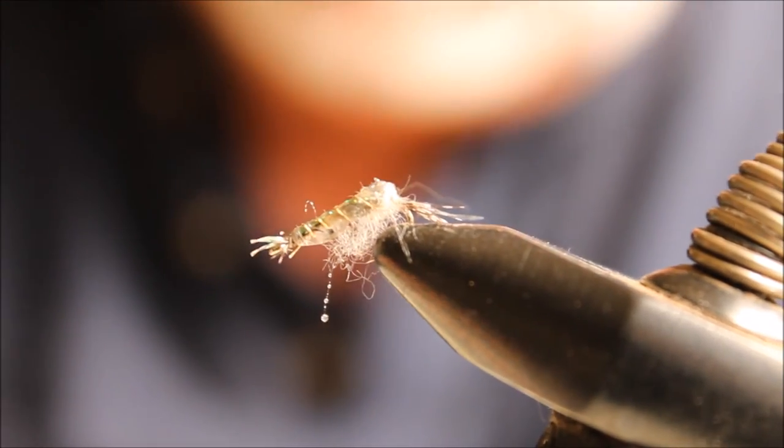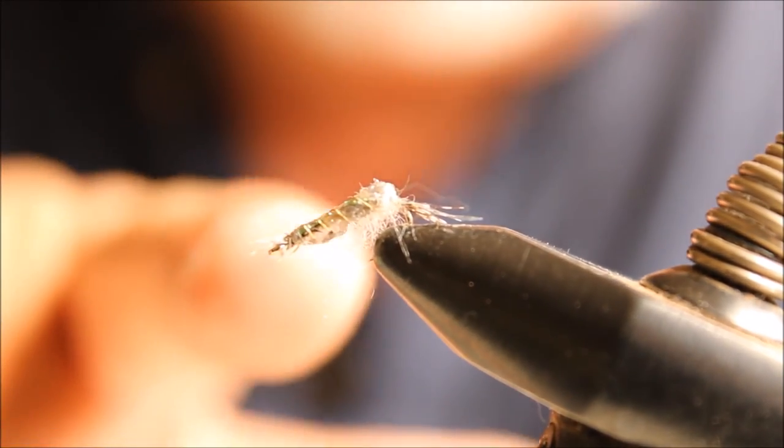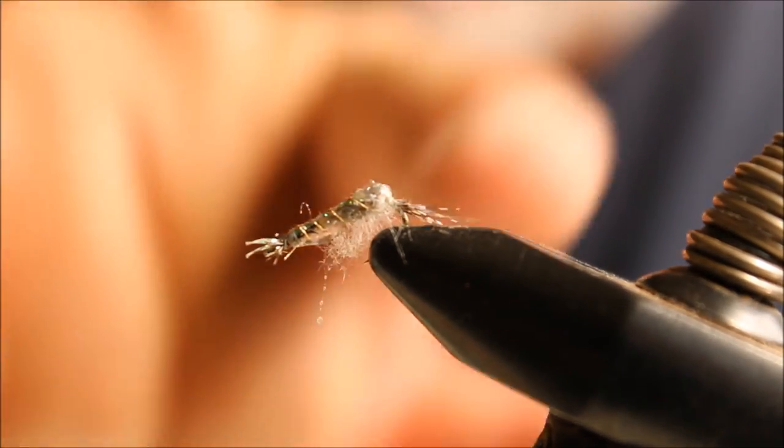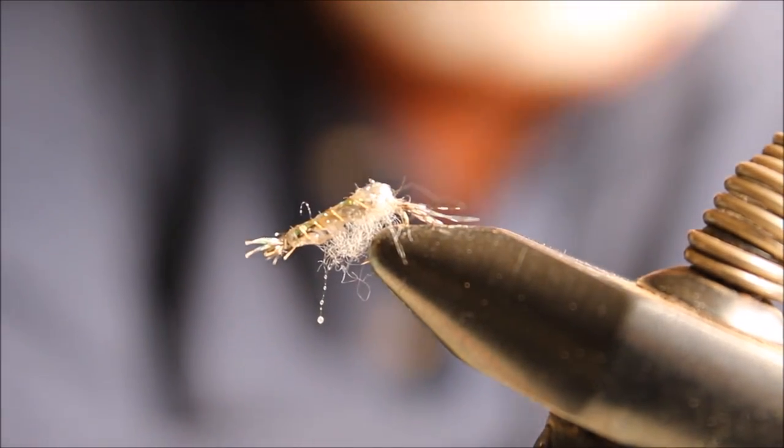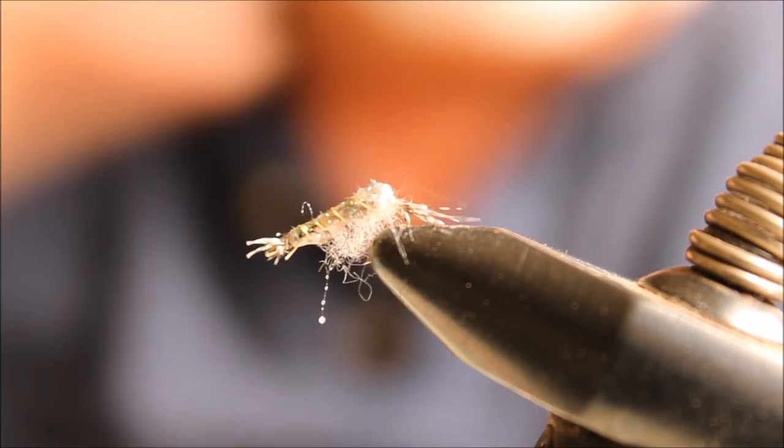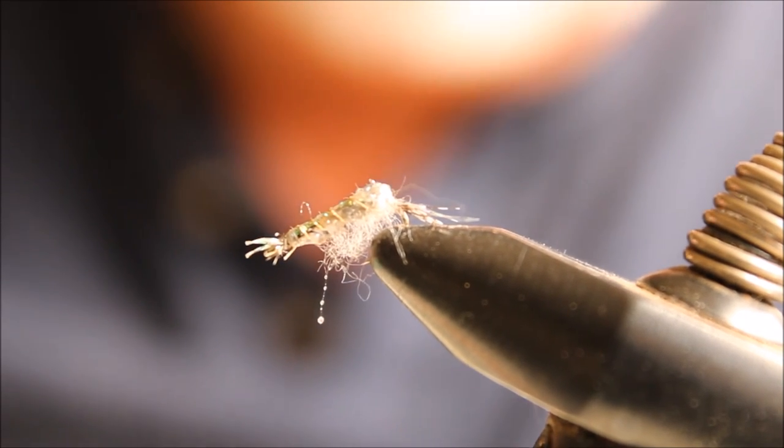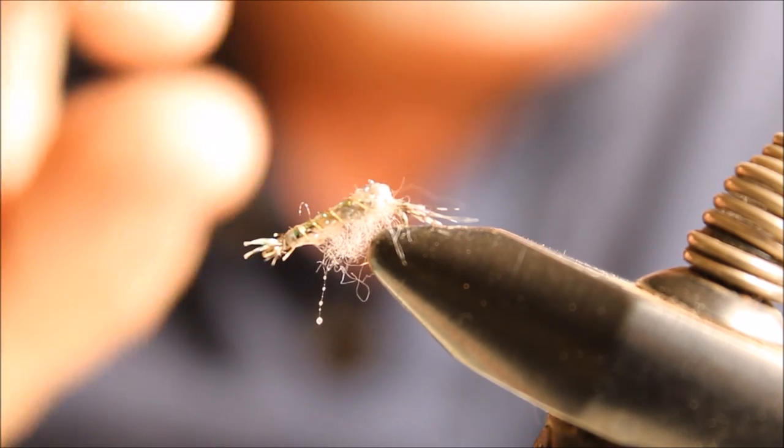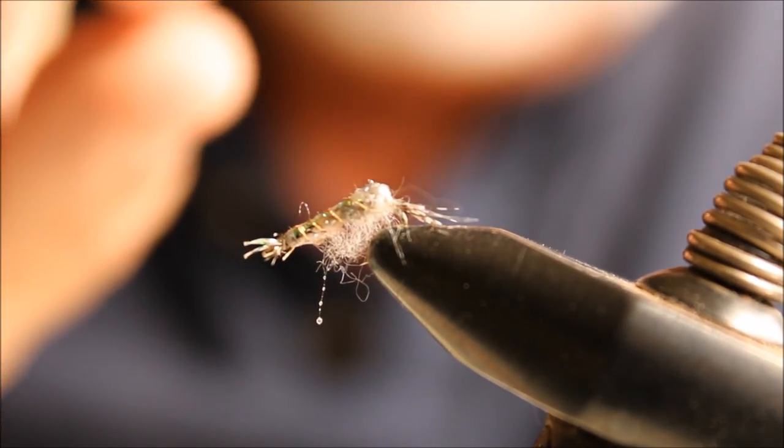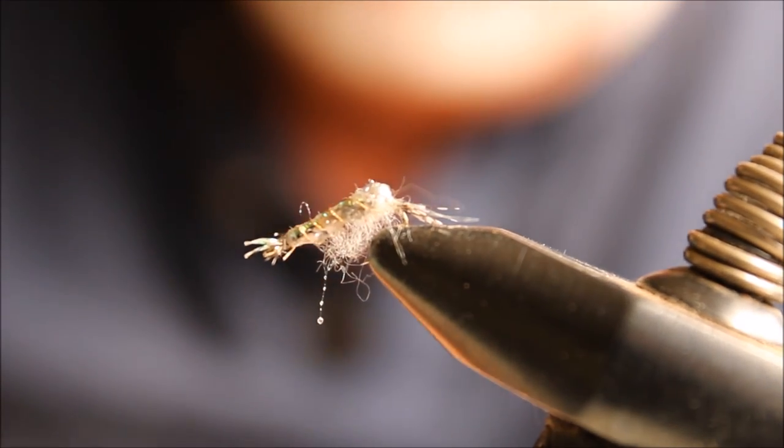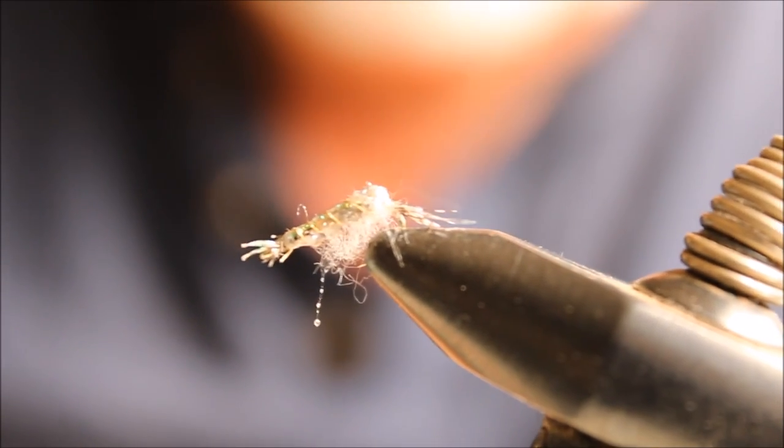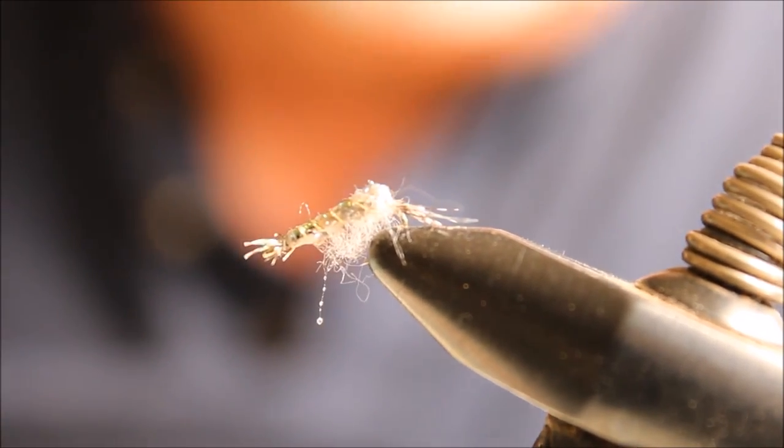A lot of times when I use this fly, I'll use it in tandem, which this will be the top fly, then I'll have like 14 inches of fluorocarbon tippet. I'll put a bottom fly right here, and it works very well. The tan patterns mimic the dead scud bodies that are available to the trout early morning and late afternoon to early evening. These patterns are very good and very productive.